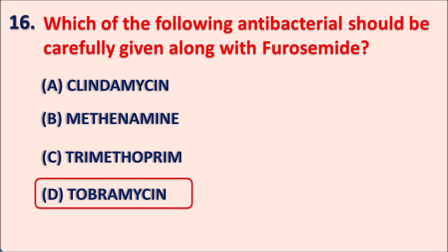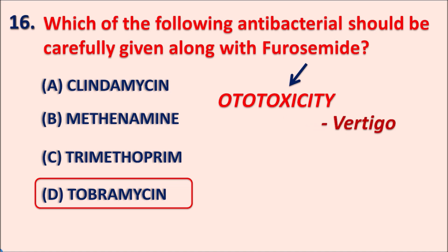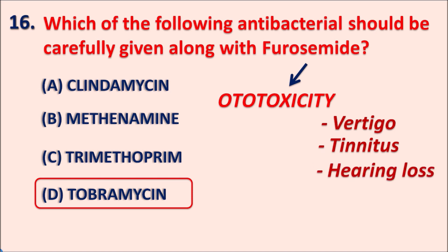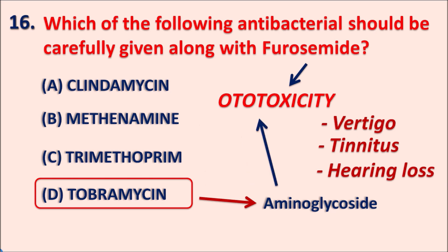Tobramycin should be carefully given along with furosemide because furosemide, apart from its renal actions, can also produce ototoxicity resulting in vestibular disorders like vertigo, tinnitus, and loss of hearing. Therefore, furosemide should be carefully combined with other drugs that also produce ototoxicity. Tobramycin is an aminoglycoside antibiotic, and aminoglycosides produce ototoxicity as well as nephrotoxicity. When tobramycin is given with furosemide, ototoxicity is increased, so these two drugs should be carefully combined.